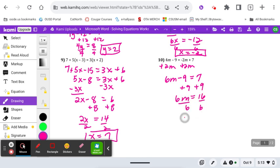A lot of students asked me about this one because it comes out to a fraction of 16 sixths. I can divide 16 by two and divide six by two and get a reduced fraction of eight-thirds.